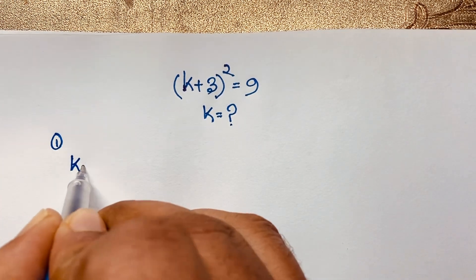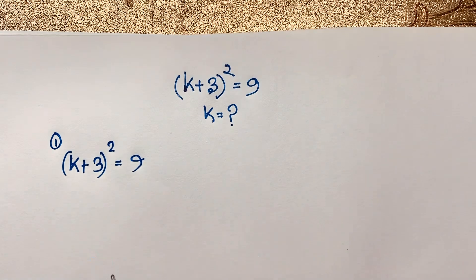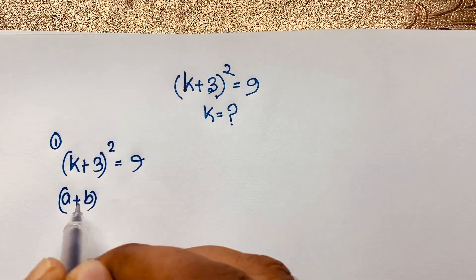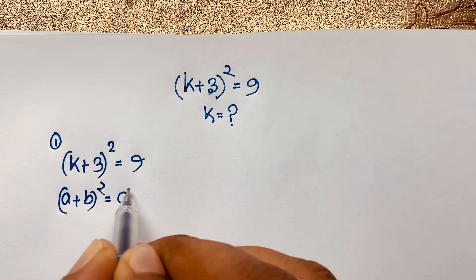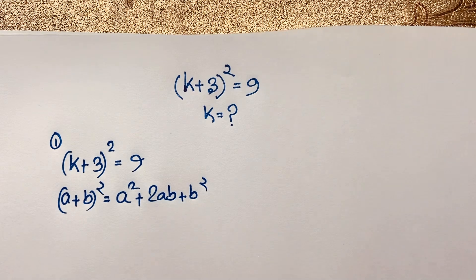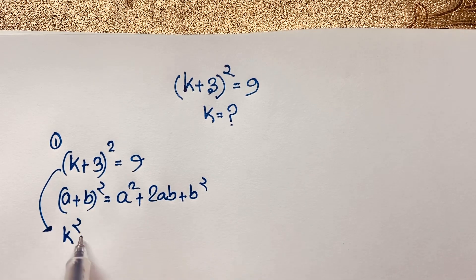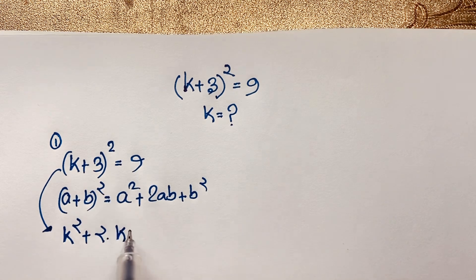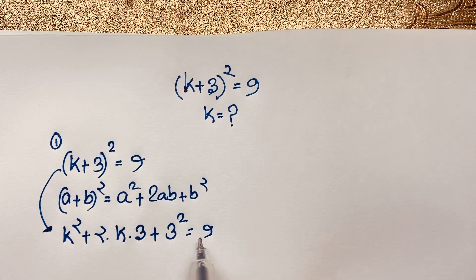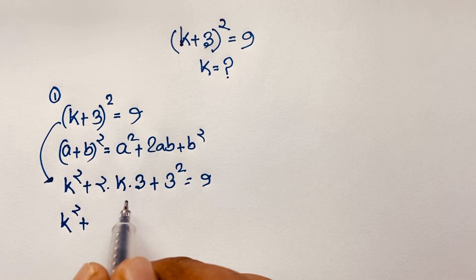Our question is (k + 3)² = 9. Now we know the formula (a + b)² = a² + 2ab + b². If I apply this formula here, where a is k and b is 3, it will be k² + 2·k·3 + 3².